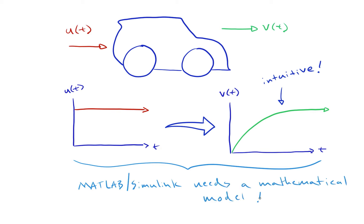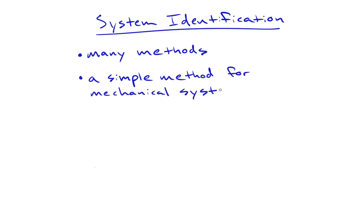Fundamentally, the process of mathematically capturing a dynamic system is called system identification. There are many ways to identify a given system, but one simple way to model a mechanical system like this is to first analyze the external forces and then apply Newton's second law.